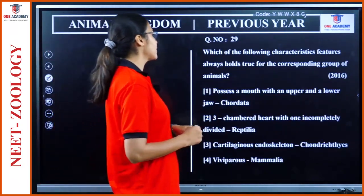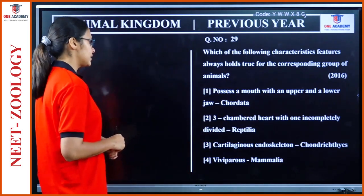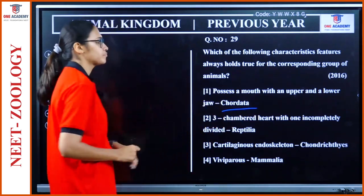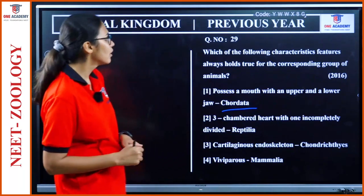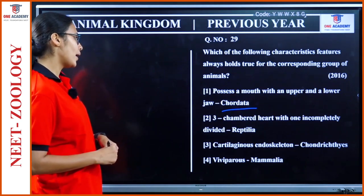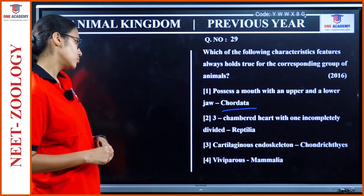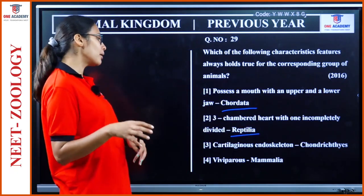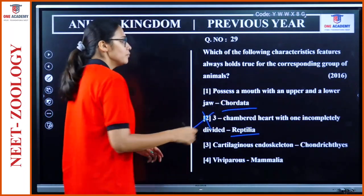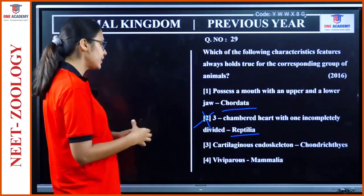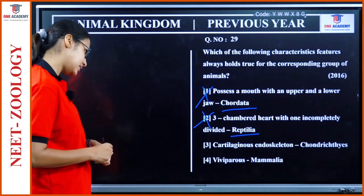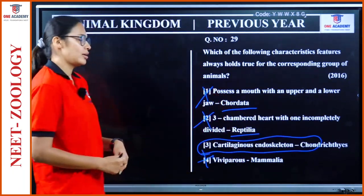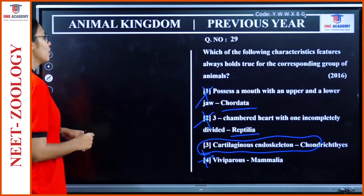Question 29: 'Which characteristic always holds true for its corresponding group?' Mouth with upper and lower jaw — for Gnathostomata. Three-chambered heart with one incompletely divided chamber — that is reptilia, but the statement says completely divided which is wrong. Chordata possessing a mouth with upper and lower jaw — no, Acnata has no jaw. Chondrichthyes possess cartilaginous endoskeleton — yes, correct without exception. Viviparity in mammals has exceptions. So option 3 — cartilaginous endoskeleton in Chondrichthyes — is the answer.